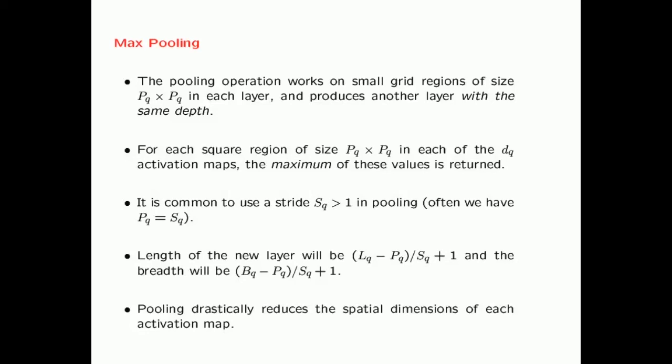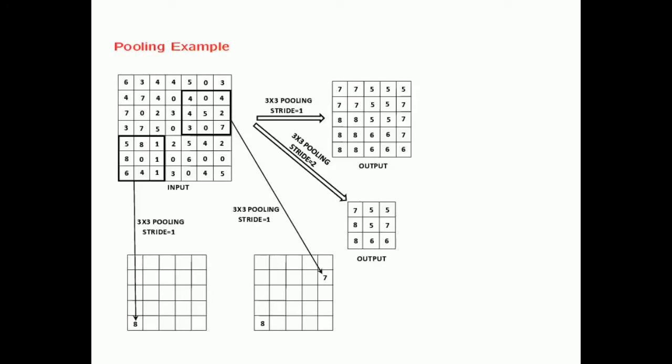Pooling drastically reduces the spatial dimensions. For example, with 3 cross 3 pooling at stride 1, the lower-left output is 8 — the maximum element in the lower-left 3 cross 3 grid. Similarly, the lower-right output is 7, the maximum in that highlighted region. When using a stride of 2, the output becomes a much smaller 3 cross 3 map.